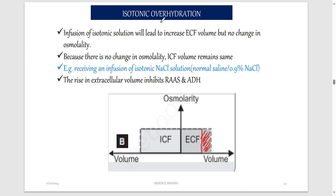An example of isotonic overhydration is receiving an infusion of isotonic sodium chloride, also called normal saline. Isotonic sodium chloride is 0.9% sodium chloride. If the concentration is anything higher than 0.9%, it is hypertonic, not isotonic. Normal saline is 0.9% sodium chloride. If you are injected with this, it is going to increase the ECF volume without affecting fluid movement between compartments.